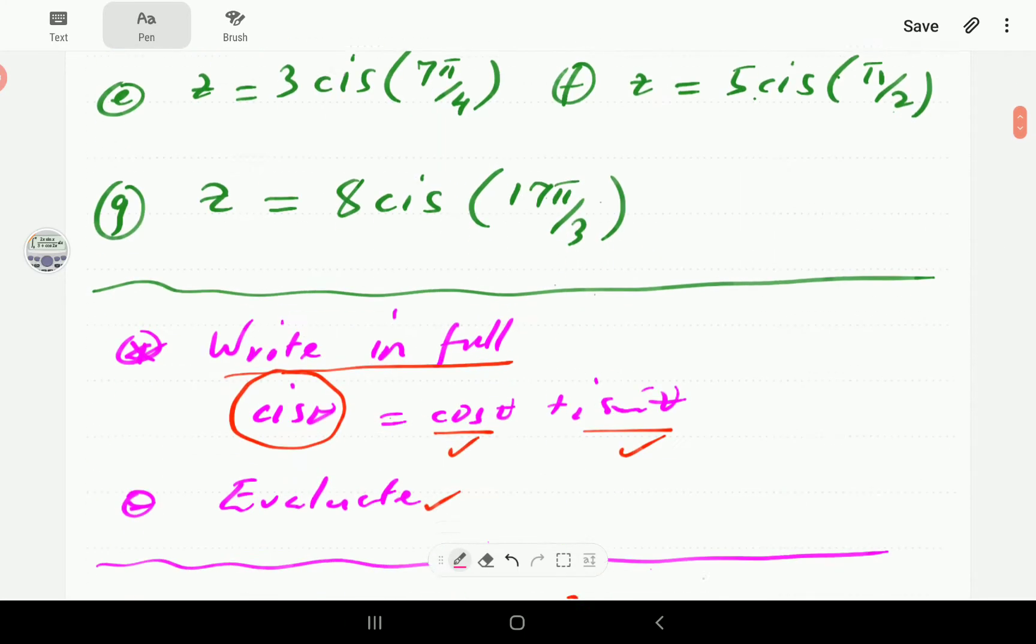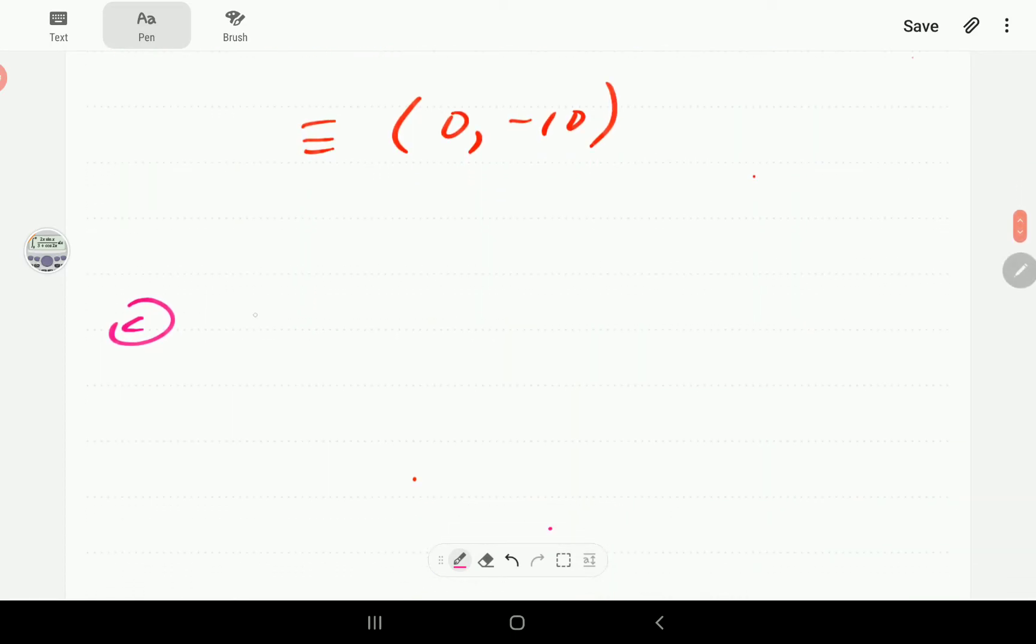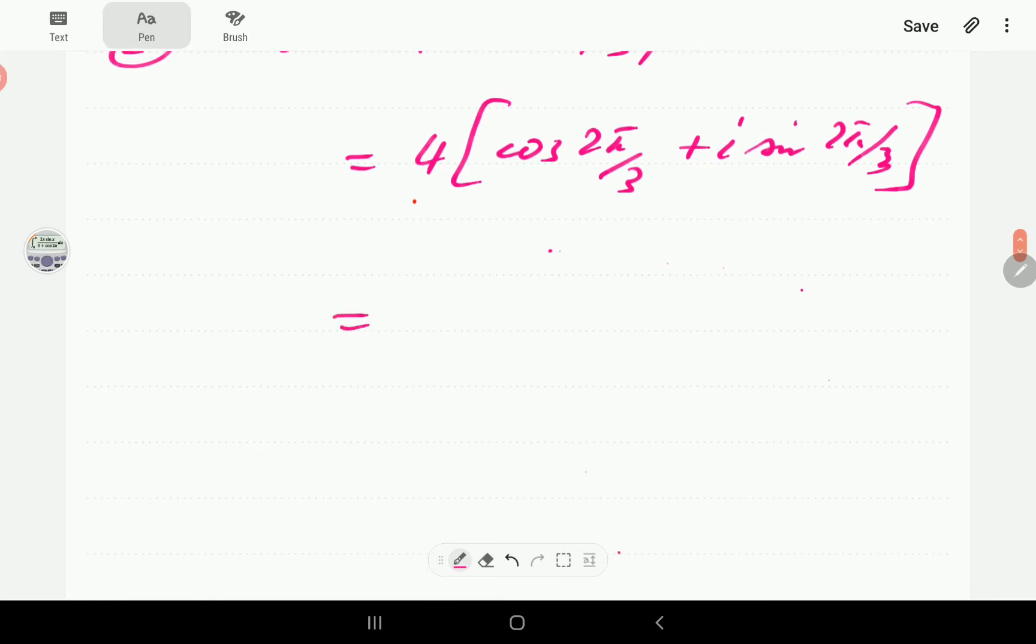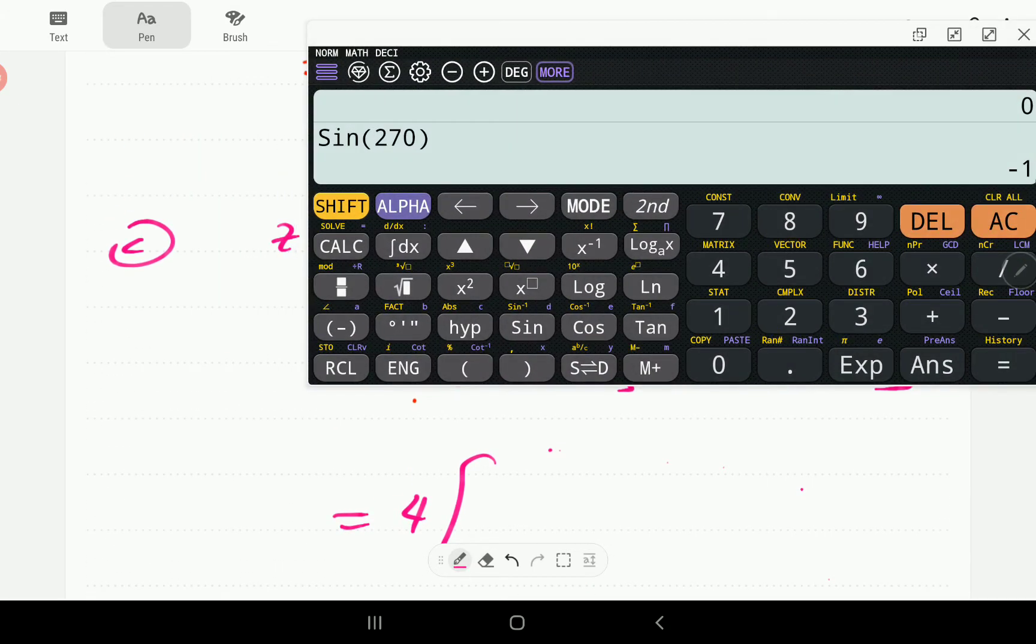Then for part (c), the angle is in radians this time. We have 4 cis two pi on three. Expanding this gives us four times cosine two pi on three plus i sine two pi on three. What we could do here is to convert this to degrees, or we can just change the mode of our calculator to radians and simply punch it in as it is.